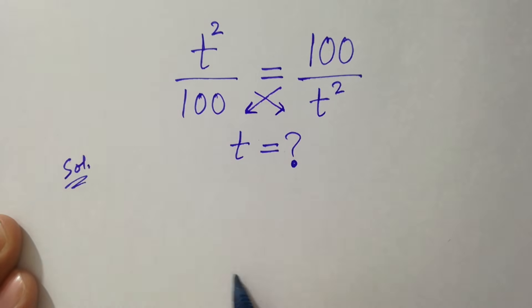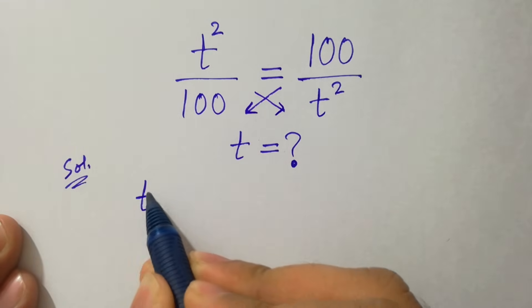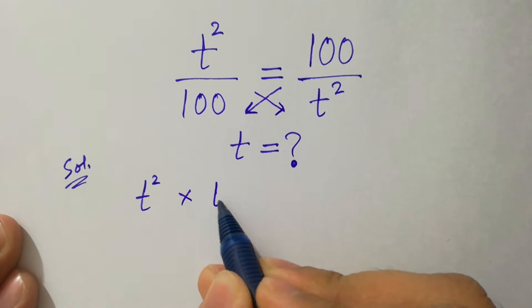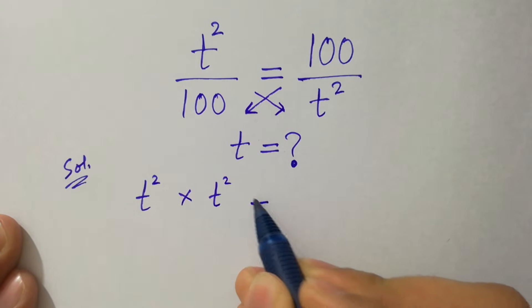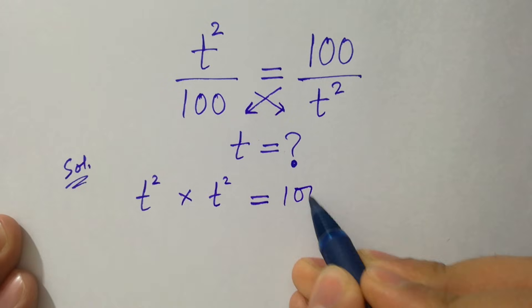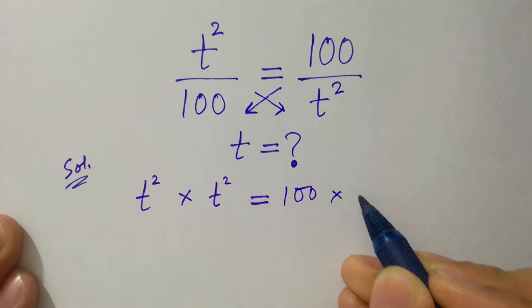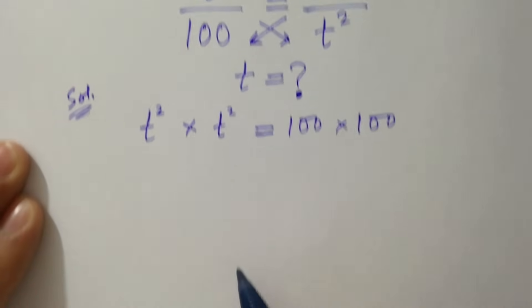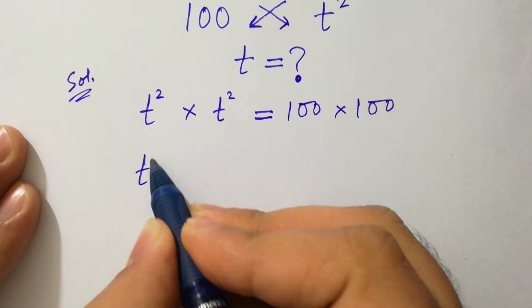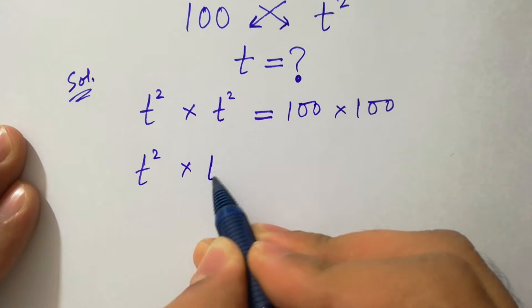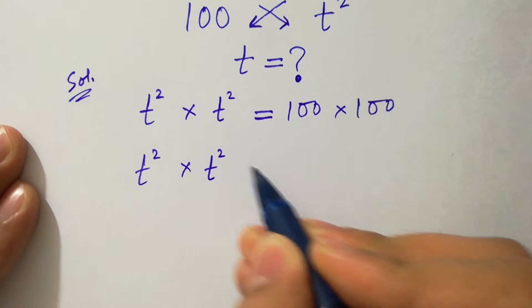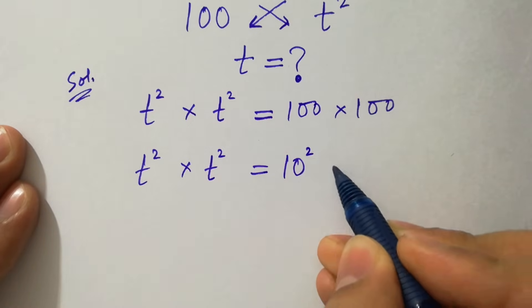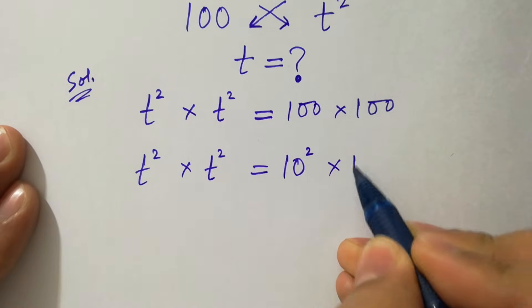We have t square times t square equal to 100 times 100. t square times t square, where 100 is the same as 10 square times 10 square.